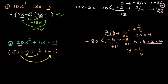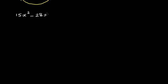Let me finish off with two questions you can do yourself. First: 15x squared minus 28x plus 12 — the same process, multiply the two end coefficients and find the two factors which add to give you minus 28. And one more: 16x squared plus 32x plus 50.